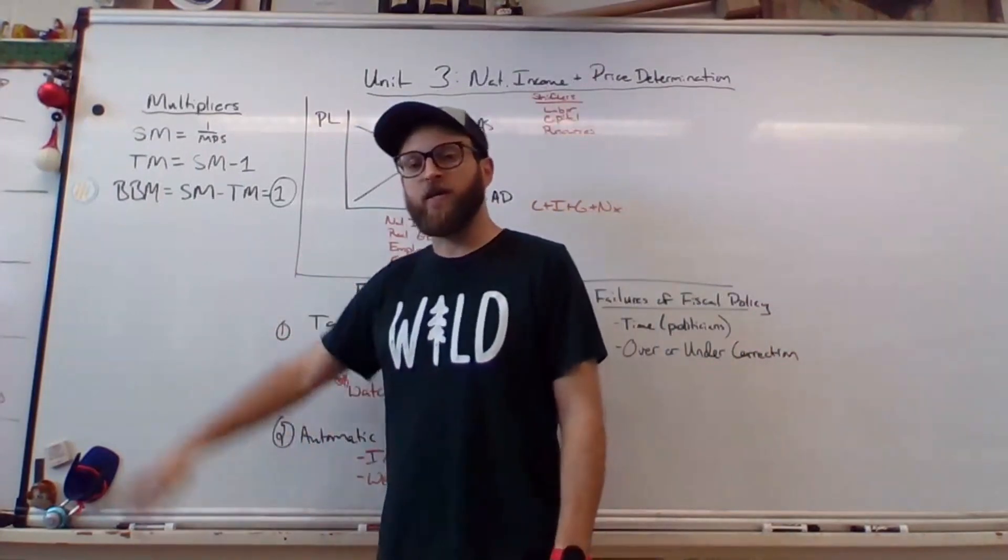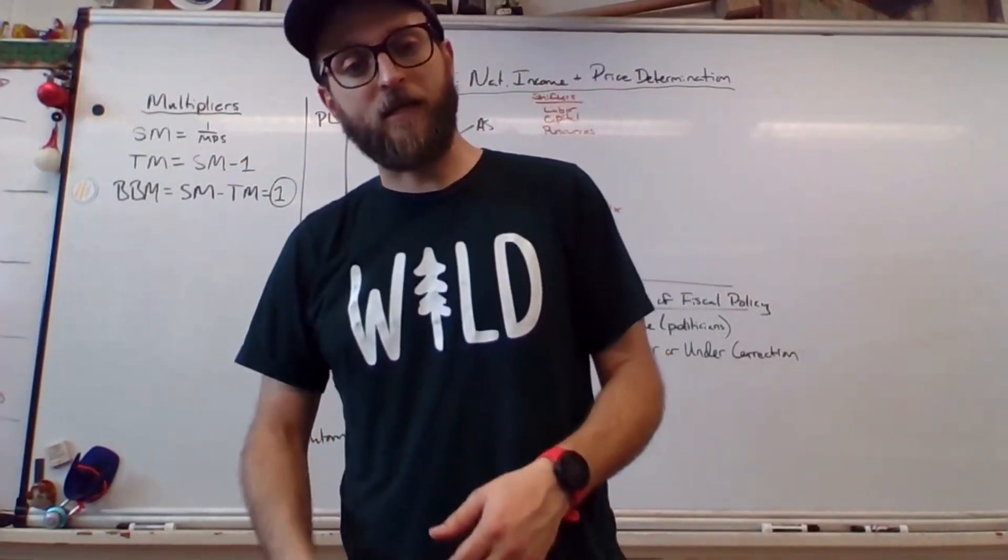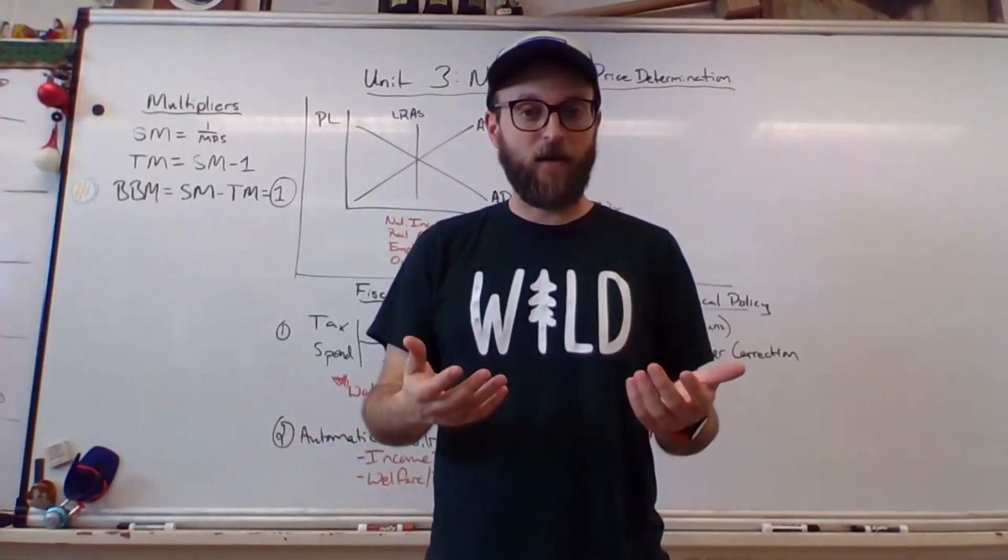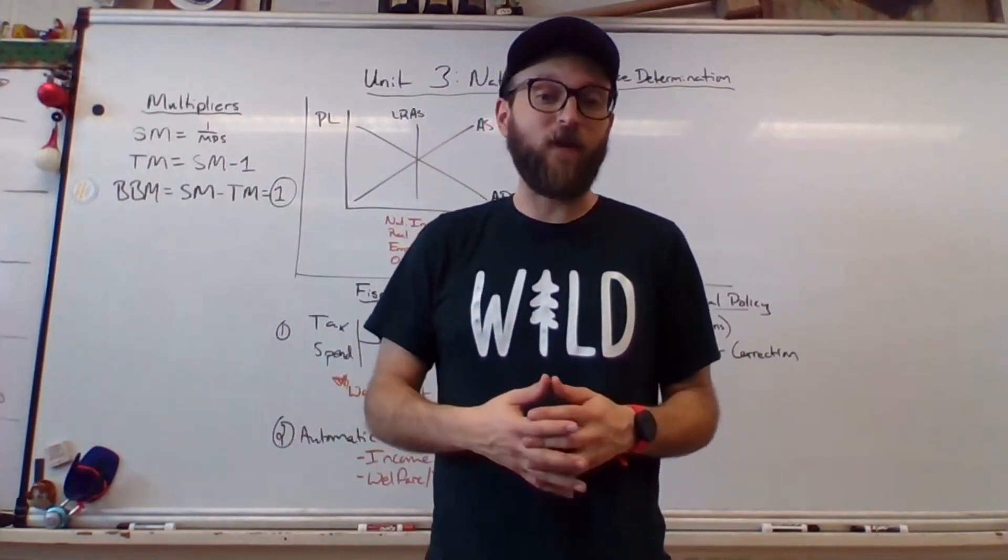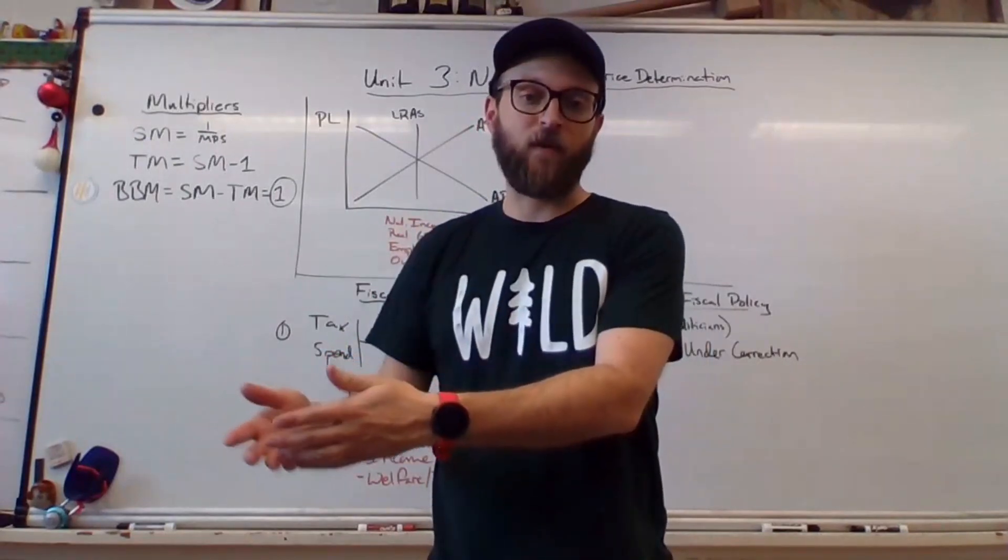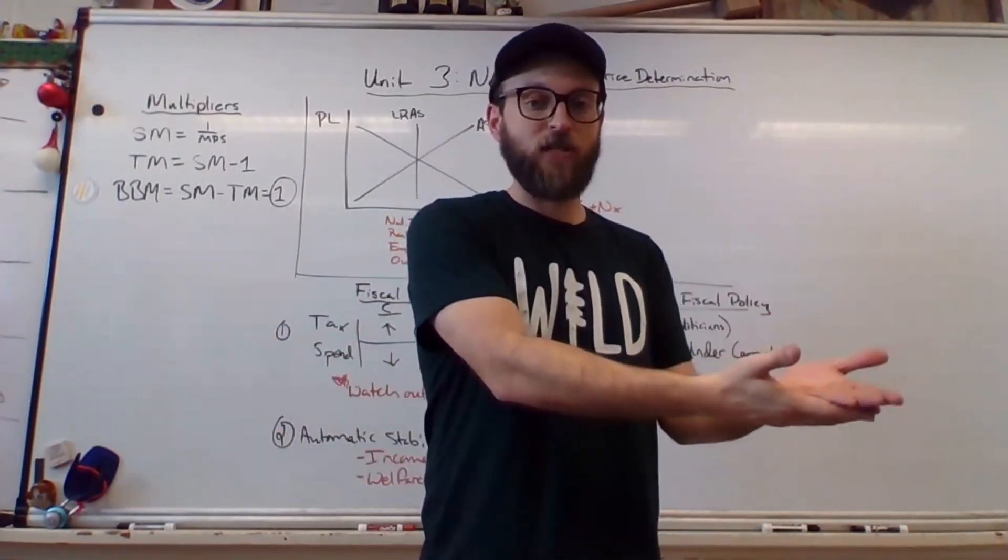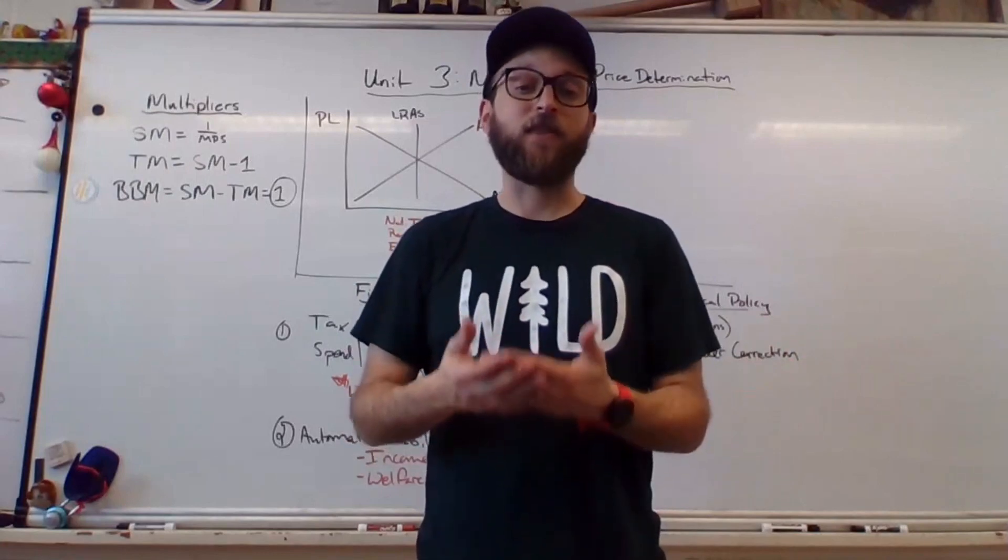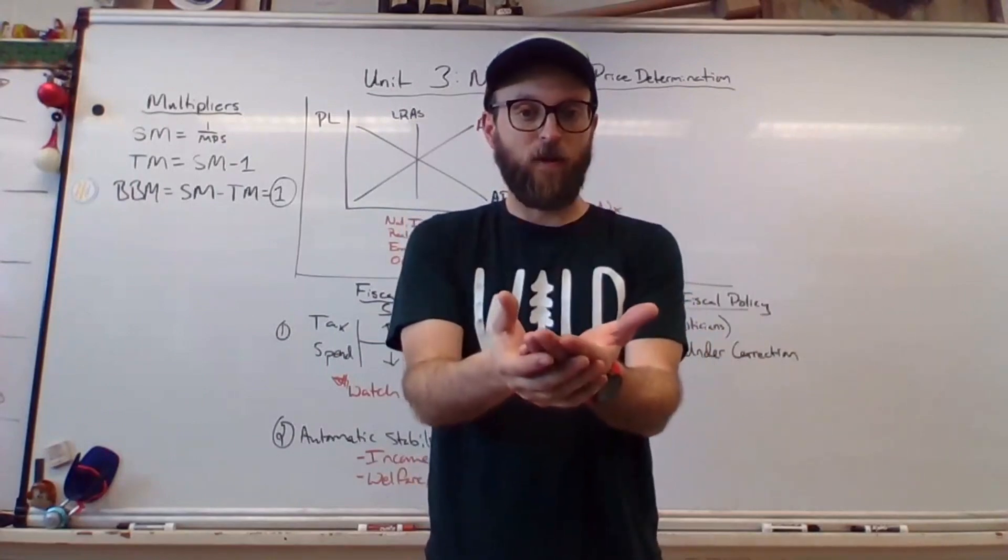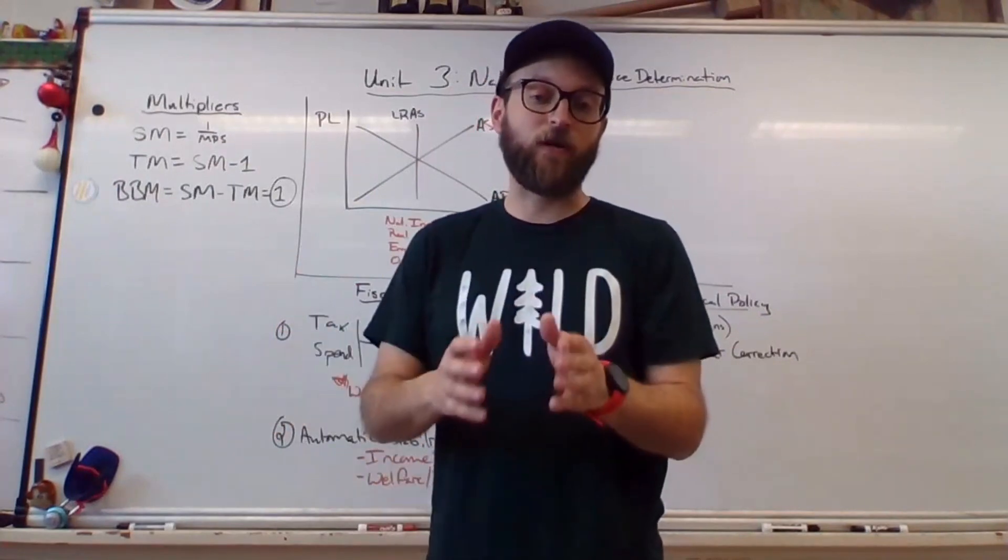To get the spending multiplier, you go 1 over MPS, and you ask yourself, how many times does MPS go into 1? So if we know MPS is 0.10, the spending multiplier will be 10, because 0.10 goes into 1 ten times. If it were 0.20, the spending multiplier would be 5. And the application of these multipliers goes like this. The government spends X amount of money, and they want to know that amount of money times the multiplier gives you the maximum multiplied effect to GDP. So the goal is to apply the multiplier. The other option is they tell you here's the maximum multiplied effect of GDP, here's the multiplier, and we need to know how much money to spend. So in that scenario, you divide. So watch the wording of the question very carefully.